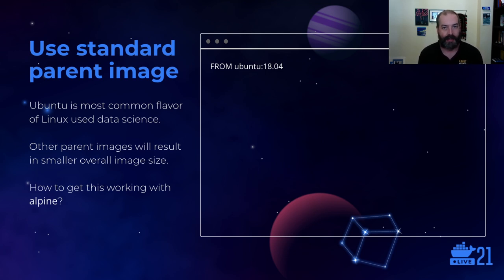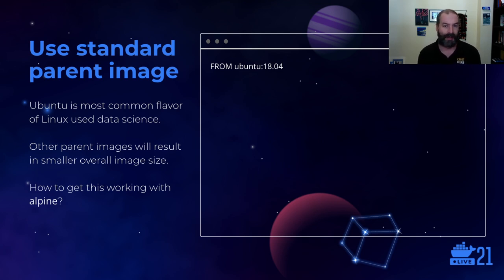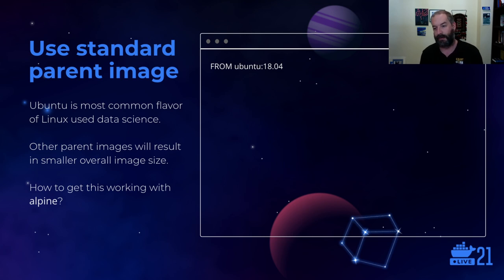Ubuntu doesn't have the smallest footprint, and one open question I have is how to make the resulting images smaller. In particular, I tried to get this working with Alpine but couldn't make it happen. So if you have ideas about how to shrink the overall image size from this process, or if you think you know how to get this working with Alpine, please reach out to me.